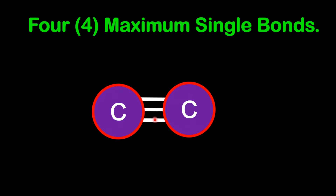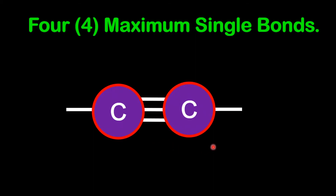Since there is a triple bond between two carbon atoms, think about how many more bonds each can have. If we have a maximum of four bonds and three are already used by the triple bond, each carbon requires only one more bond to make up four — so four bonds total around each carbon.